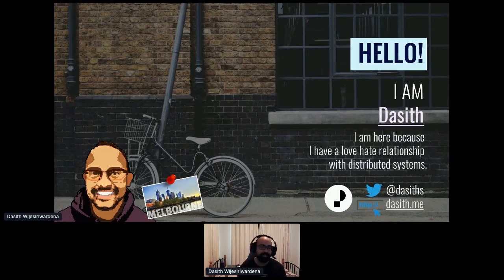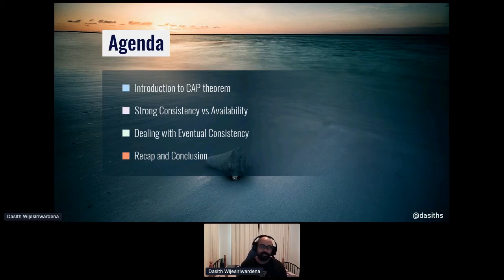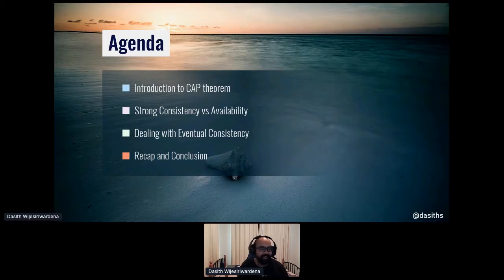The aim of this talk isn't to do a deep dive, rather to show you some ways to deal with eventual consistency and arouse your interest. There's a lot of good material on the internet if you need a deep dive. The agenda for today is to introduce you to the CAP theorem. I'm sure many people already know it, but for those who don't, I'll do a brief rundown and explain why modern cloud-scale or hyperscale systems prefer high availability over strong consistency and how that leads us to eventual consistency. We'll look at a few ways to deal with eventual consistency, and I'll leave you with some ideas to take home.